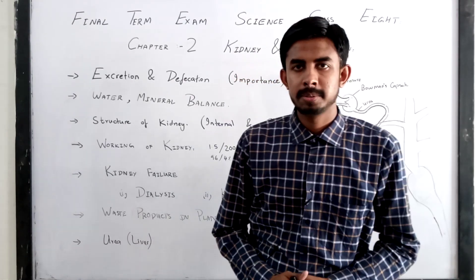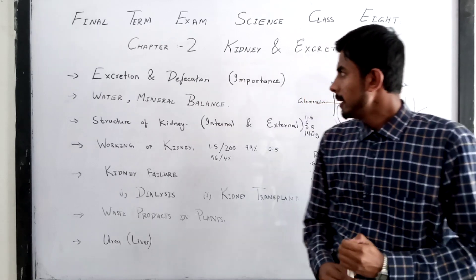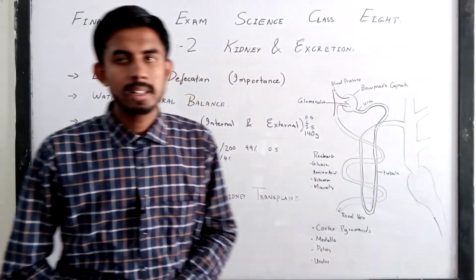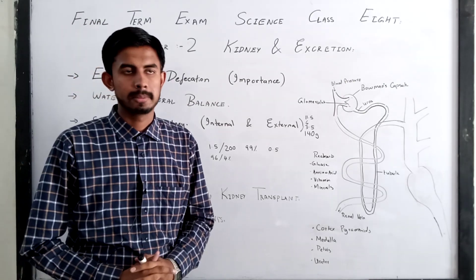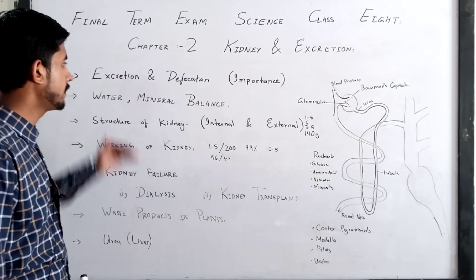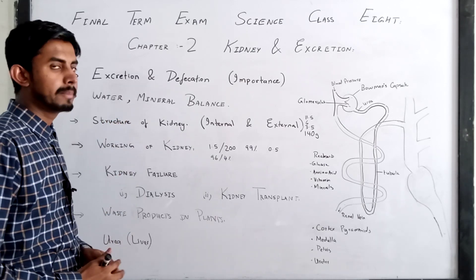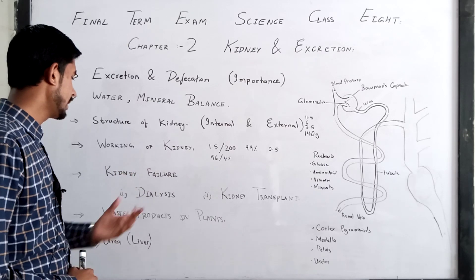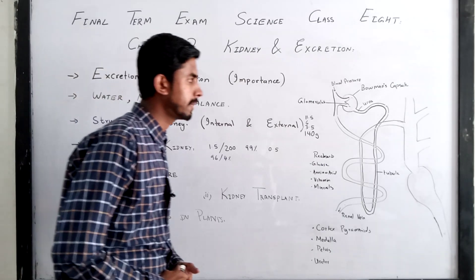Dear student, welcome to science class for the final term examination. Today we are going to discuss the chapter kidney and excretion, which is the second chapter of Oxford Science. In today's topic we will discuss one by one: excretion and defecation, water and mineral balance, structure of kidney, working of kidney, kidney failure or kidney diseases, and lastly waste products in plants.